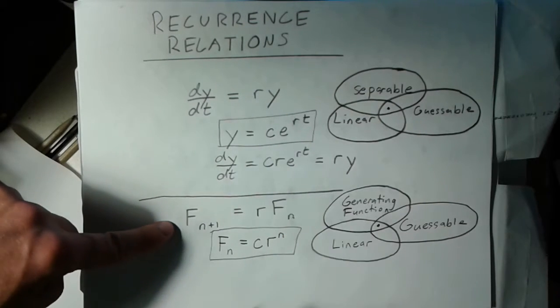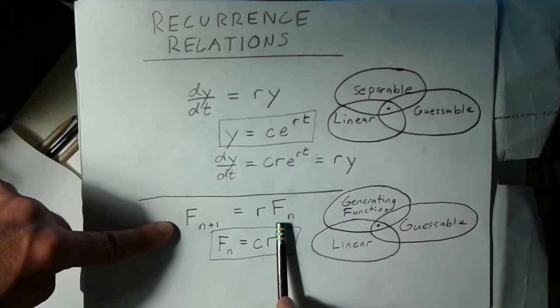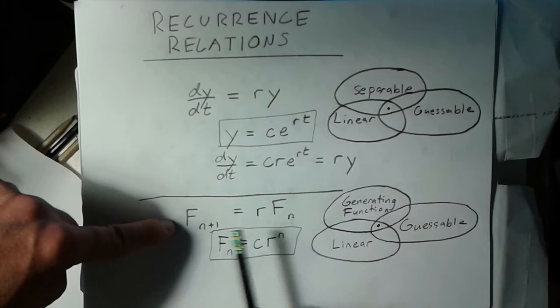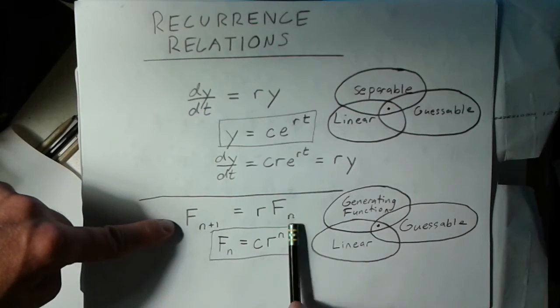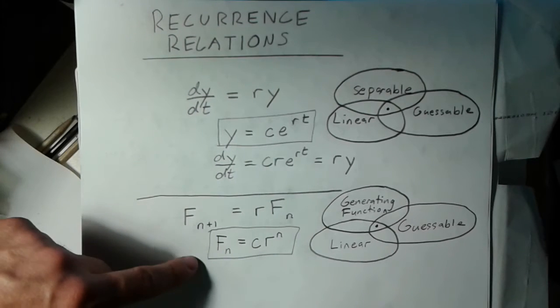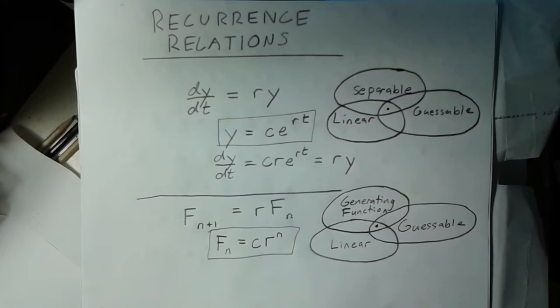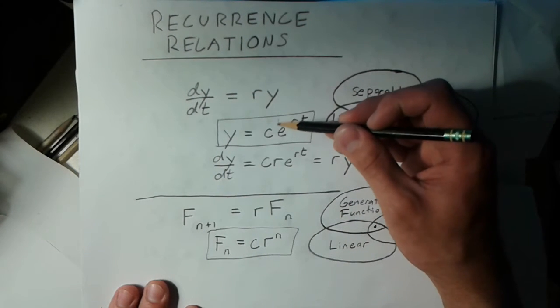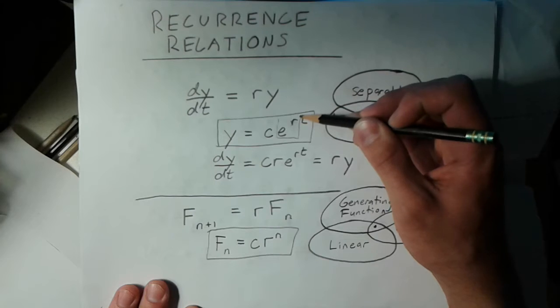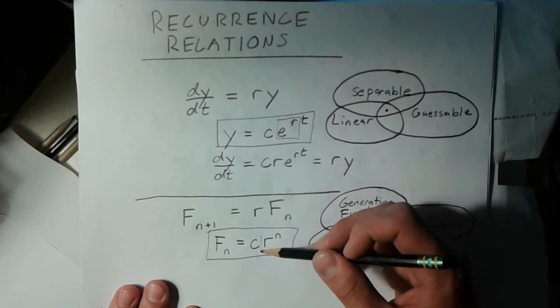Here we're asking, what functions have an n plus 1th term that's proportional to the nth term? And the answer again, is all exponential functions. This is a different way of saying all exponential functions. Here we can consider our base of this exponential function to be e to the r. Here the base is just r.